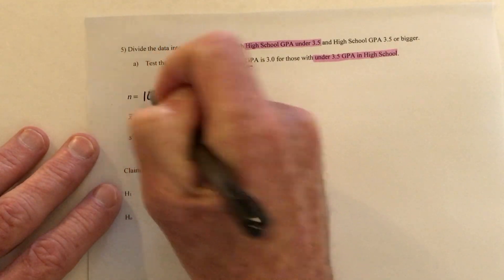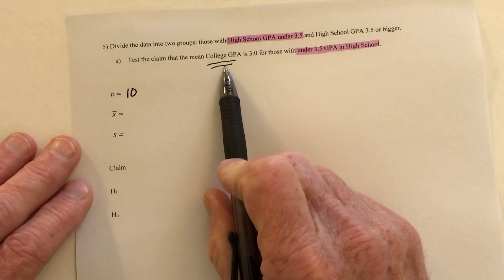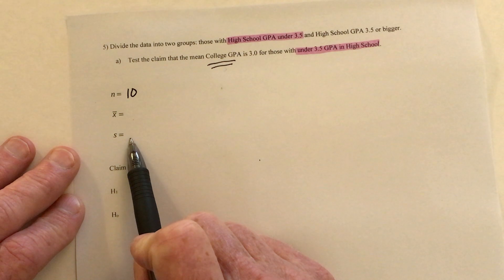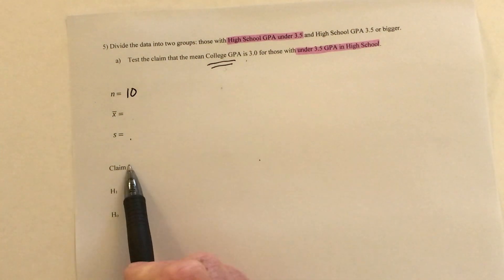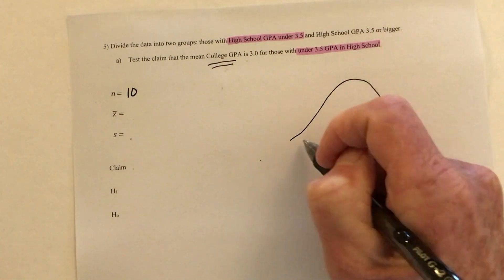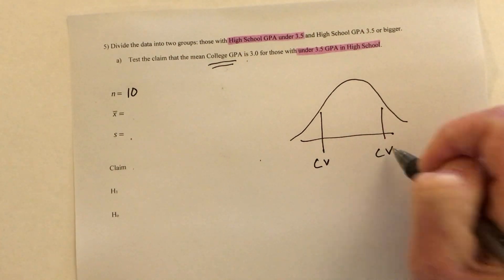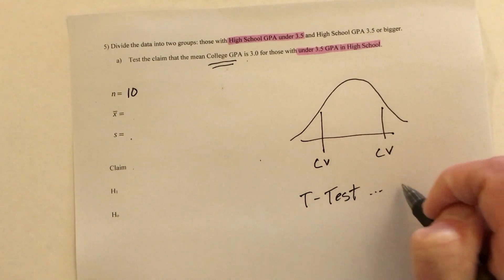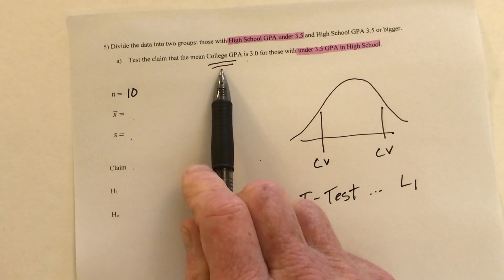So n is going to be 10 people. Put those 10 college GPAs into the list, then find the mean and standard deviation. The claim is that the mean GPA is 3.0, so this is going to say mu equals 3.0. Then do the normal distribution, look up the critical values, and do the t-test using list one, because that's where those 10 college GPAs are.